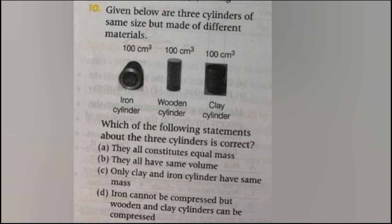Given below are three cylinders of same size but made of different materials. Which of the following statements about the three cylinders is correct? They all constitute equal mass, they all have same volume, only clay and iron cylinders have same mass, or iron cannot be compressed but wooden and clay cylinders can be compressed? The answer is B, they all have the same volume.